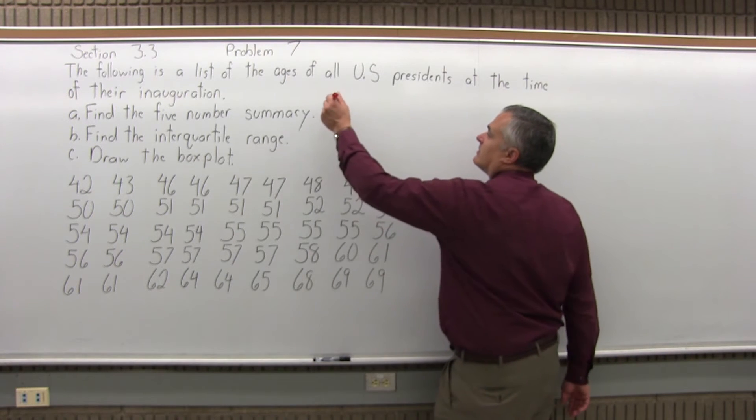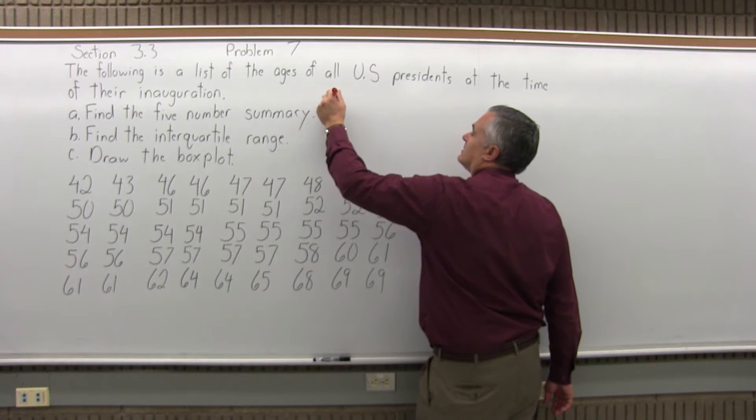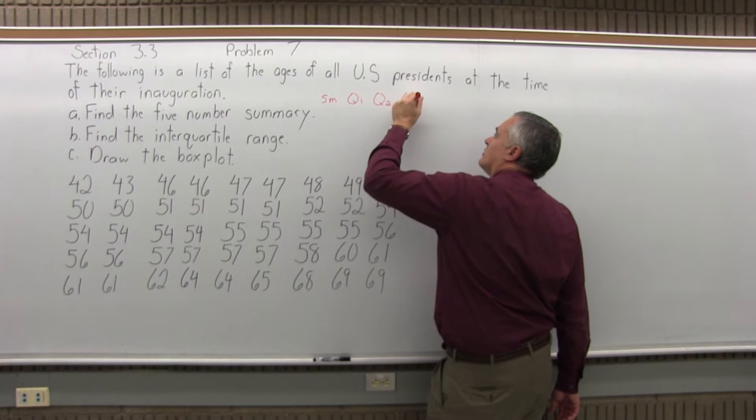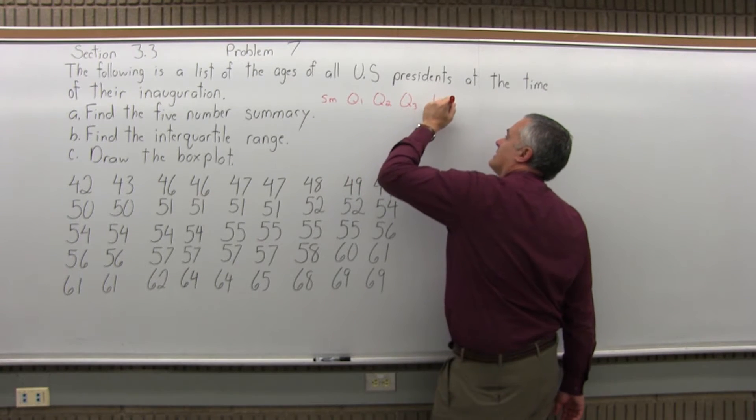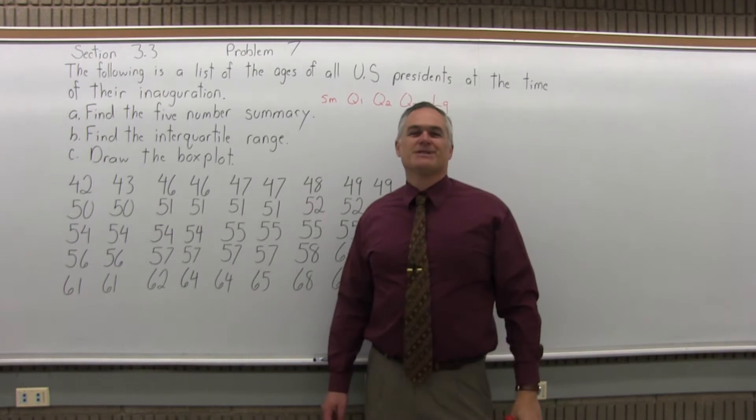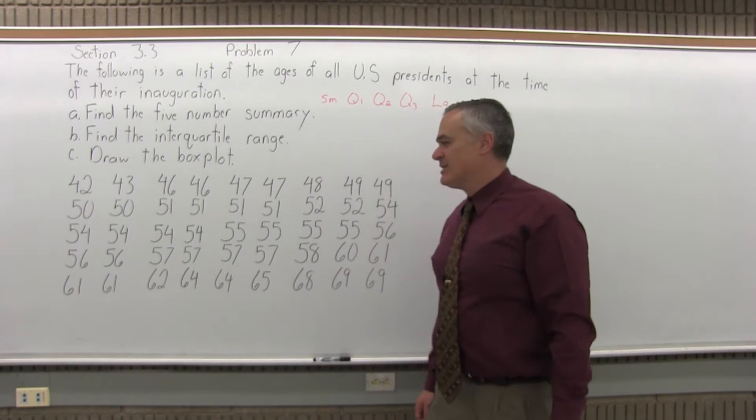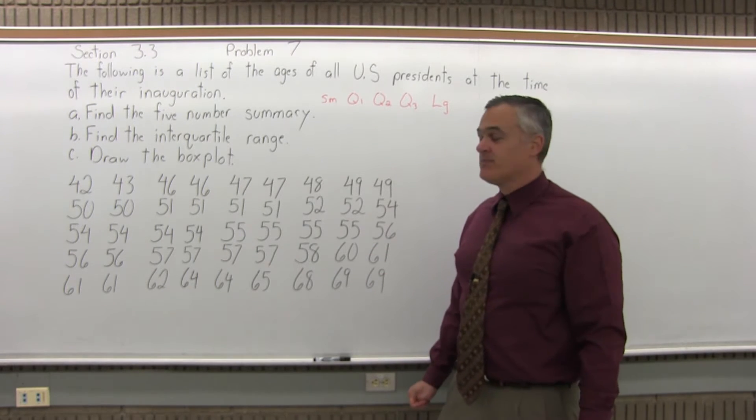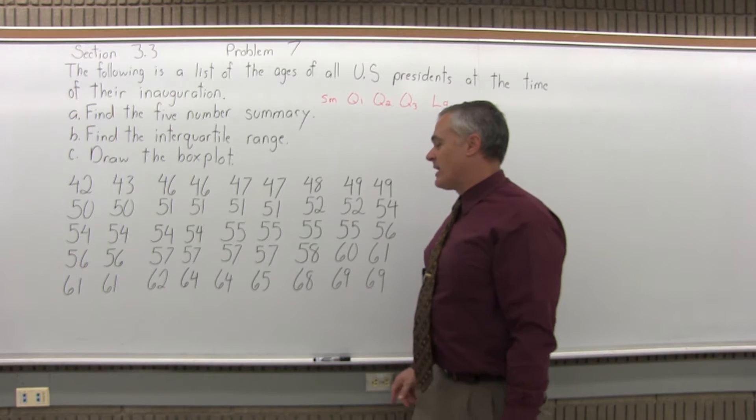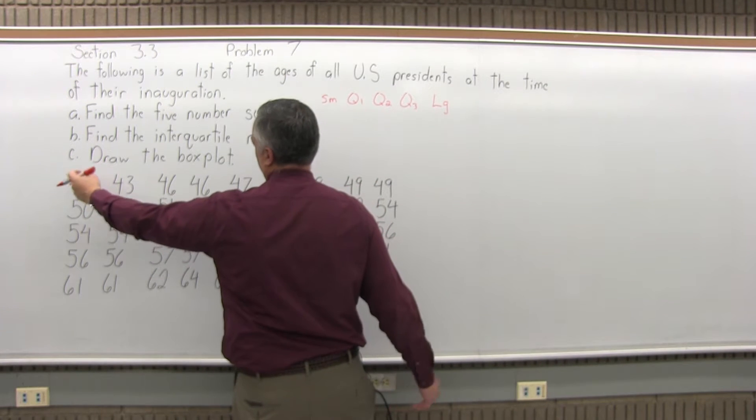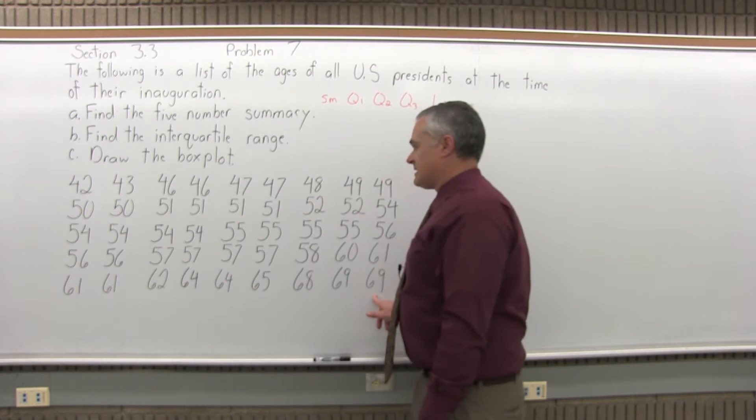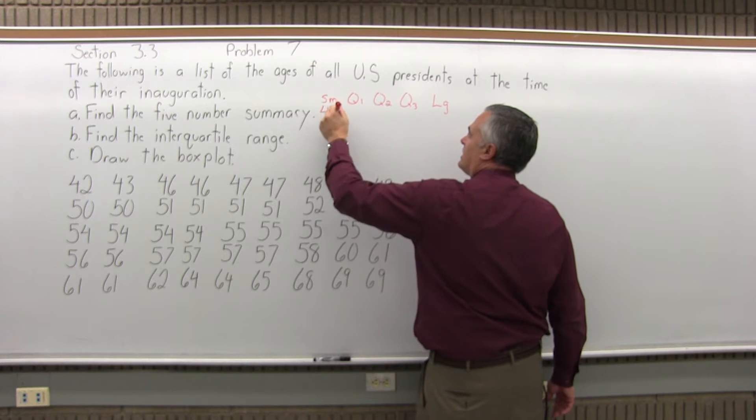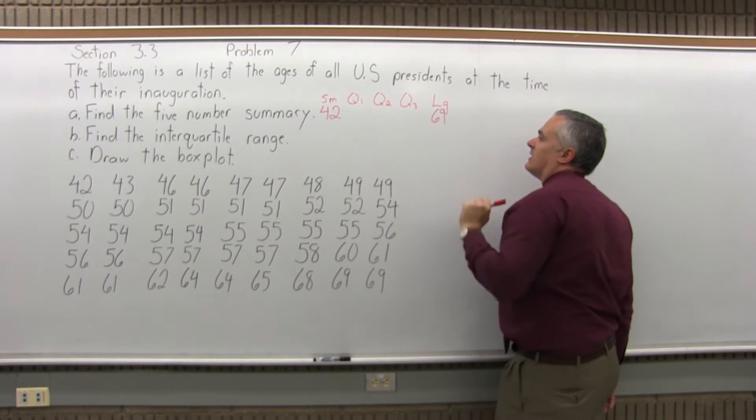For the five-number summary, we have to find the smallest data value, Q1, Q2, Q3, and the largest data value. Fortunately, this list is already in order, which saves us a good amount of work. Since it's in order, I can see that the smallest data value is 42, and 69 is the largest.